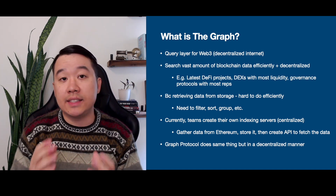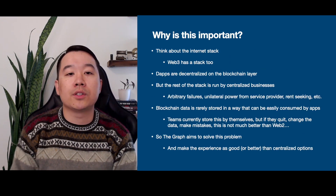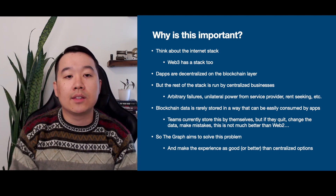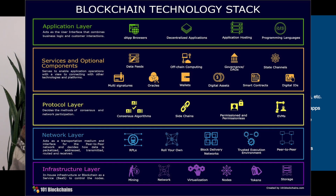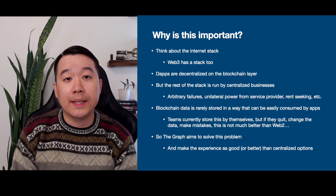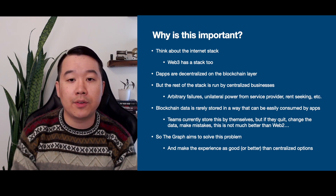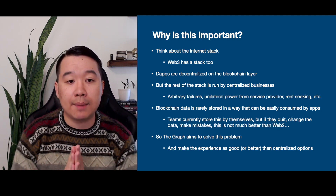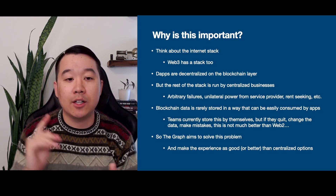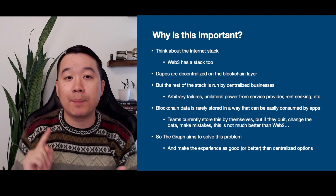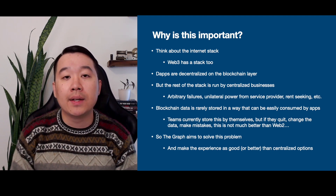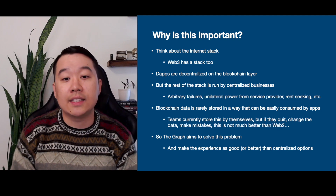Graph Protocol does this but in a decentralized manner. Why is this important? You can think about the internet as having a stack, and the Web3 version also has a stack. DApps are decentralized on the blockchain layer, which is awesome, but the rest of the stack is run by centralized businesses, making it prone to arbitrary failures, unilateral power from the service provider, and rent-seeking. If teams managing this data quit, maliciously change the data, or make mistakes, then it's no better than the centralized approach. The Graph aims to solve this problem and make the experience at least equal to centralized options.